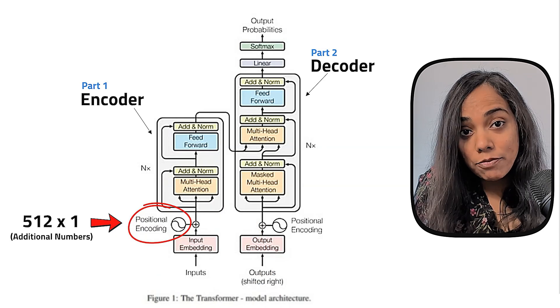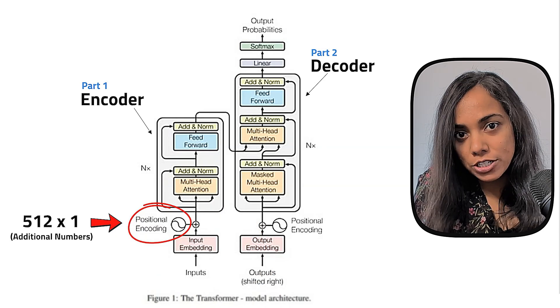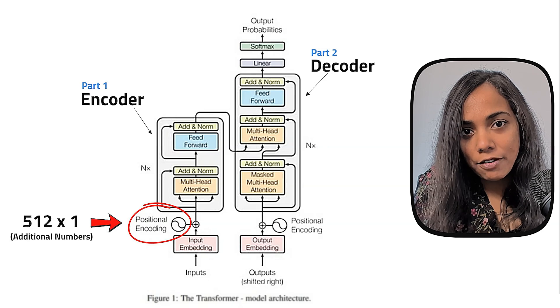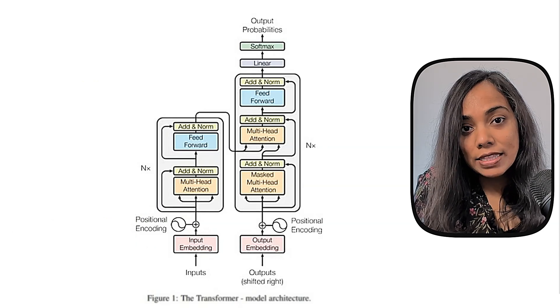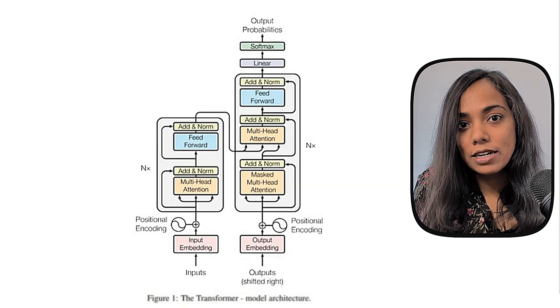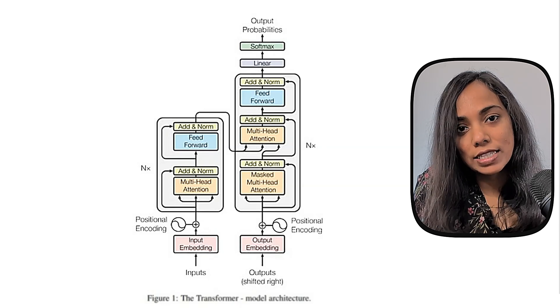The transformers then add a small trick called positional encoding. This means the same word placed in different positions in the sentence will have a different list of numbers representing it. This allows the model to clearly understand the context as well as the sequence.